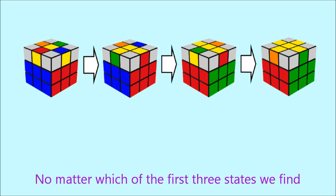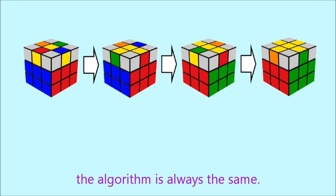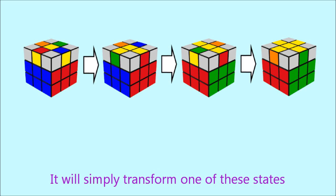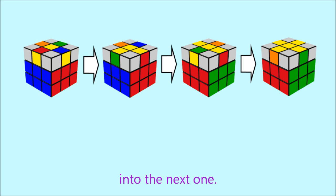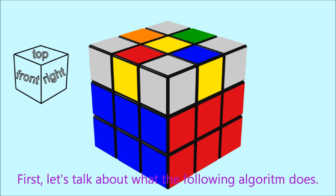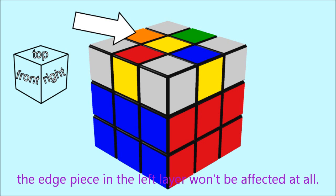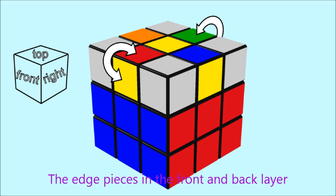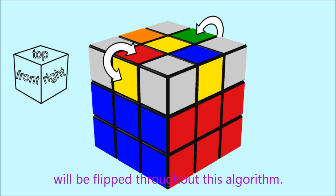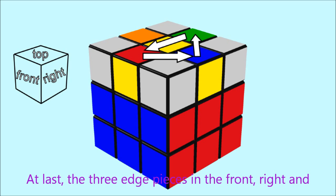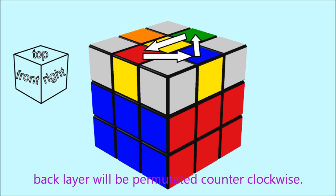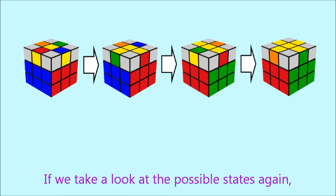No matter which of the first three states we find, the algorithm is always the same — it will simply transform one state into the next one. Looking at the cube from the front side, the edge piece of the left layer won't be affected at all. The edge pieces in the front and back layer will be flipped throughout this algorithm. At last, the three edge pieces in the front, right, and back layer will be permutated counterclockwise.